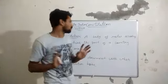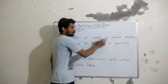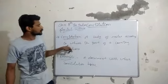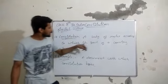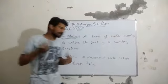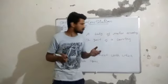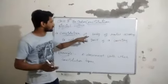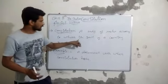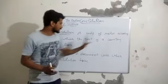What is the definition of Constitution? The Constitution is a body of rules according to which the government of our country functions. I repeat again the definition: it is the body of rules according to which the government of our country functions.